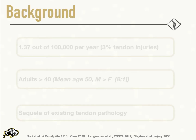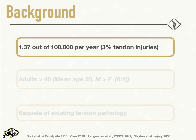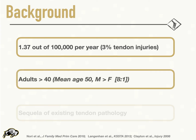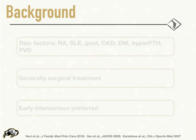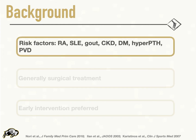Starting off with a little bit of background, quad tendon injuries are relatively uncommon, accounting for only three percent of all tendon injuries. These injuries most commonly occur in middle-aged patients and are four times more common in men than in women. They are thought to occur mostly from overuse, generally as the sequelae of pre-existing tendon pathology. While any patient can present with an acute quad tendon rupture, patients with RA, lupus, gout, chronic renal failure, diabetes, hyperparathyroidism, and peripheral vascular disease are considered to be at risk.